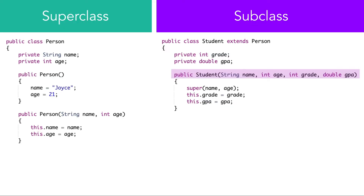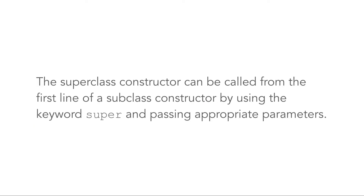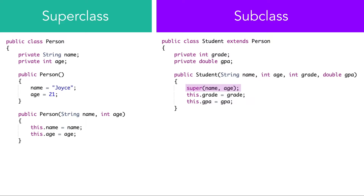Look at the parameters in the Student subclass constructor. Notice that the first parameters will be used to initialize the superclass instance variables. The superclass constructor can be called from the first line of a subclass constructor by using the keyword super and passing appropriate parameters. The very first line within the subclass constructor calls the superclass constructor using the keyword super. Then, we pass the parameters needed to satisfy the superclass constructor.